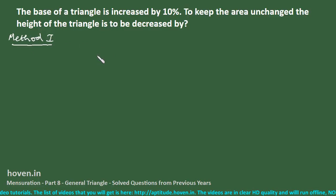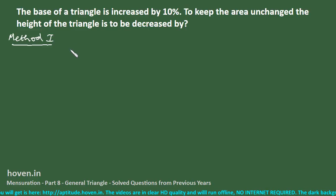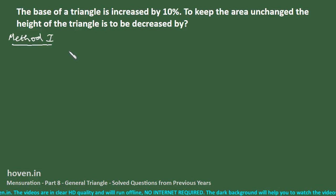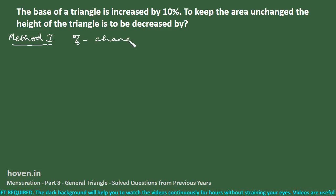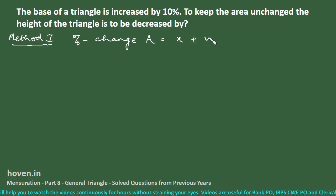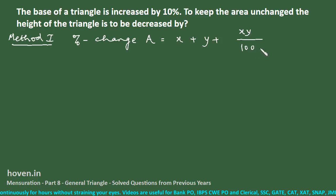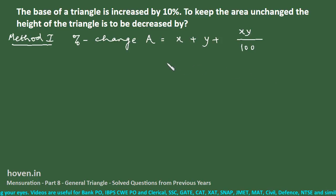Method 1. I have discussed this situation in my previous lecture. If the base of a triangle is increased by x percent and the height is changed by y percent, then the percent change in the area is given by the formula: x + y + (xy/100). This is the formula we derived, and we can straightaway make use of it.